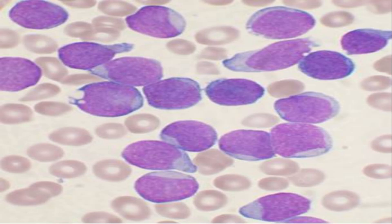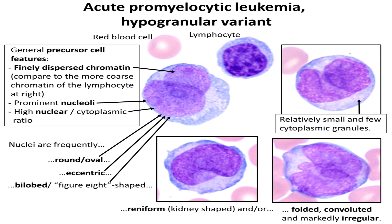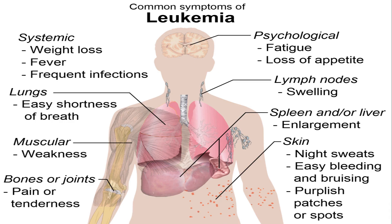Let's explore the two main types of leukemia in more detail. Acute lymphoblastic leukemia, or ALL, also known as acute lymphocytic leukemia, is characterized by the rapid proliferation of immature lymphoblasts, a type of white blood cell. It commonly occurs in children, but can also affect adults. Symptoms of ALL may include bleeding, bone pain, fever, frequent infections, and weakness, among others.